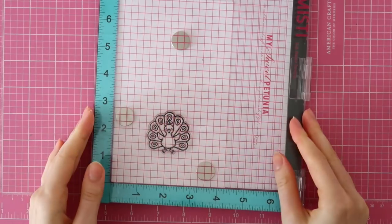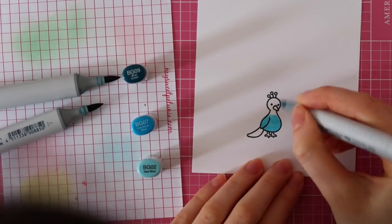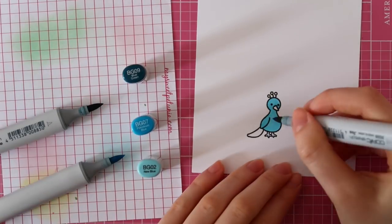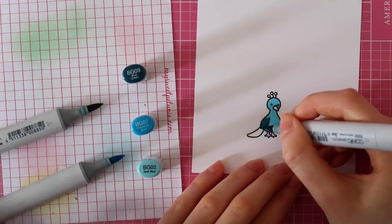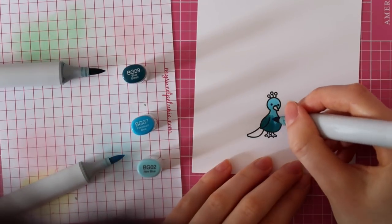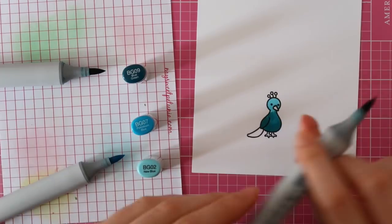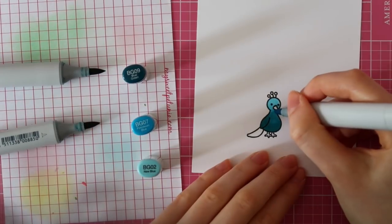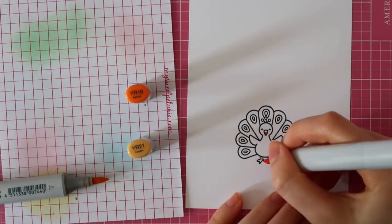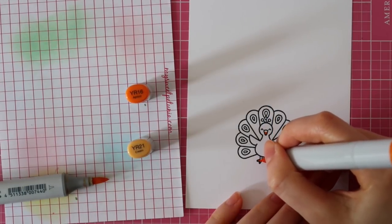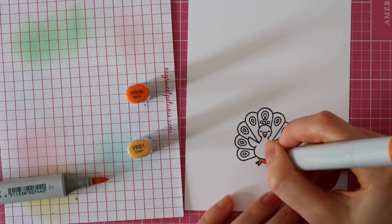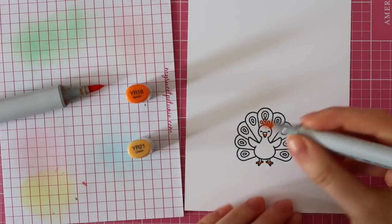I'm using Memento Tuxedo Black ink since this ink works really great with Copic Sketch markers. To color the peacock, I am laying down the BG02 color first to make sure that these colors are going to blend nicely, because I usually have a little bit of trouble to blend blue shades smoothly. Then I also use BG09 and BG07.